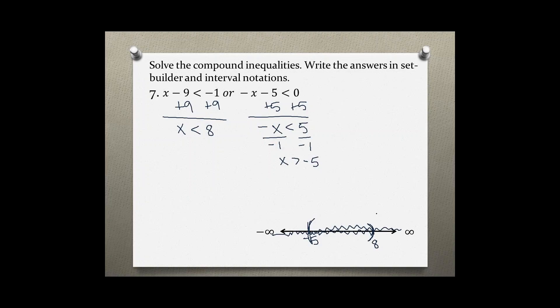For an or compound inequality, we need the union of both. So we don't need just the intersection. We want the union of everything that we have shaded. Well in this case, that's everything on the number line. That's all real numbers.